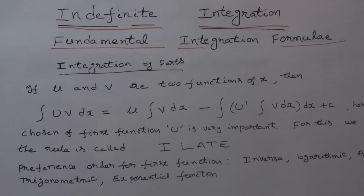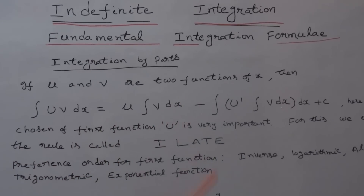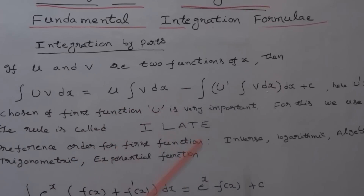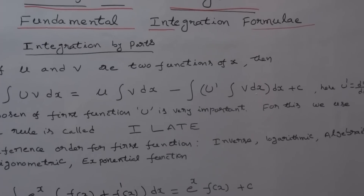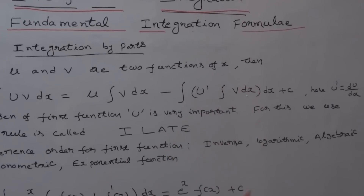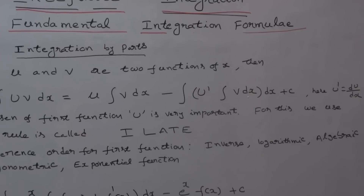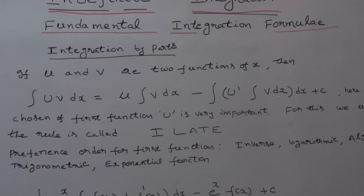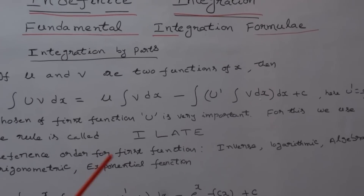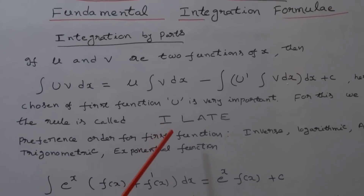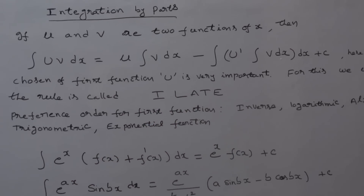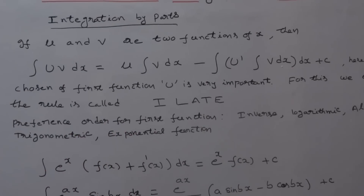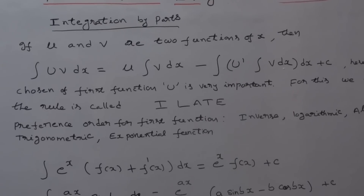Integration by parts: if u and v are two functions of x, then integral of uv dx is equal to u times integral of v dx minus integral of [u' times integral of v dx] dx plus c, where u' = du/dx. The choice of first function u is very important. For this we use the rule called ILATE: I stands for inverse, L for logarithmic, A for algebraic, T for trigonometric, and E for exponential function.